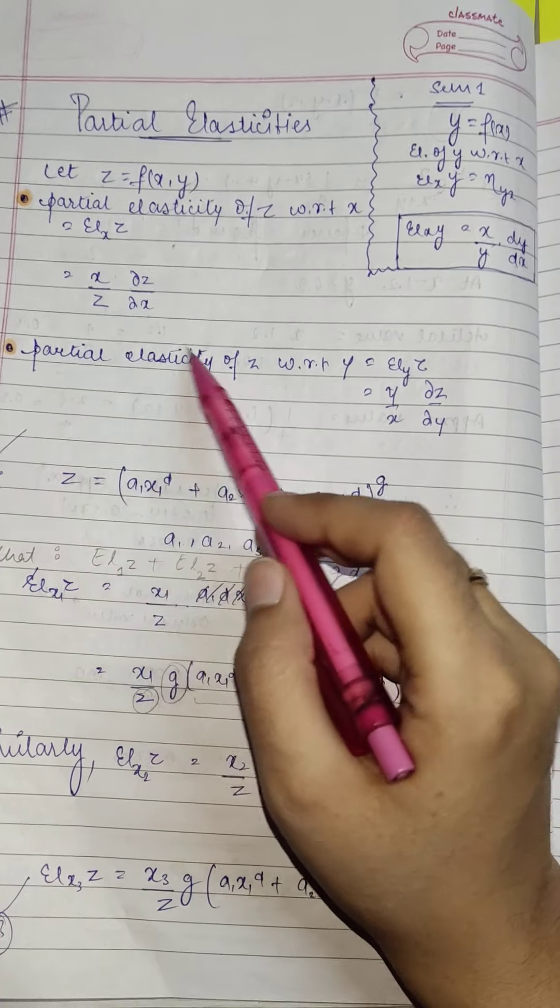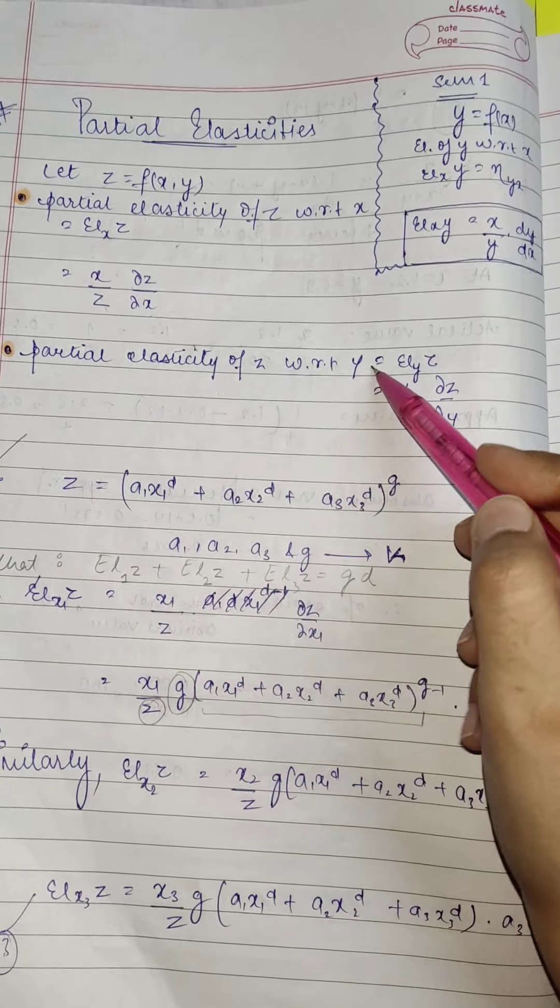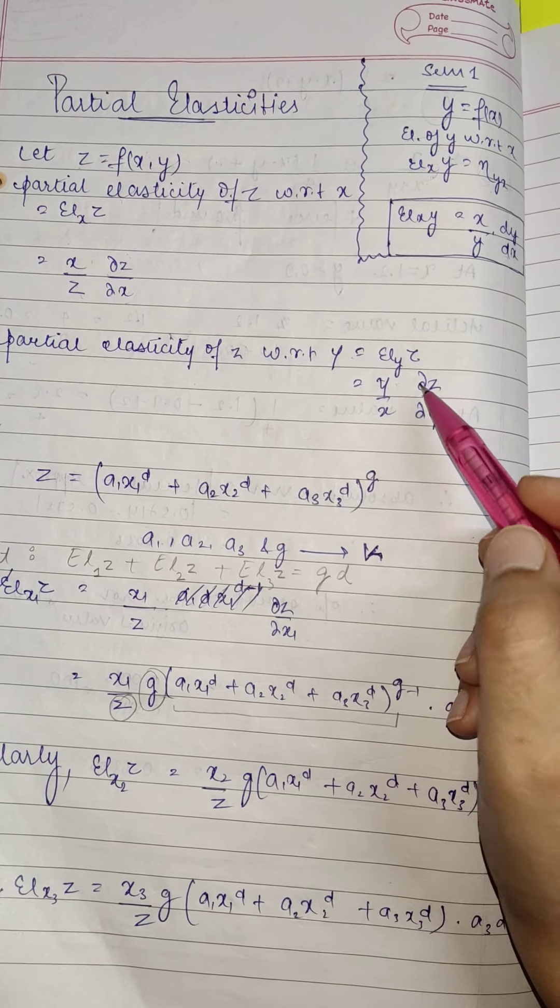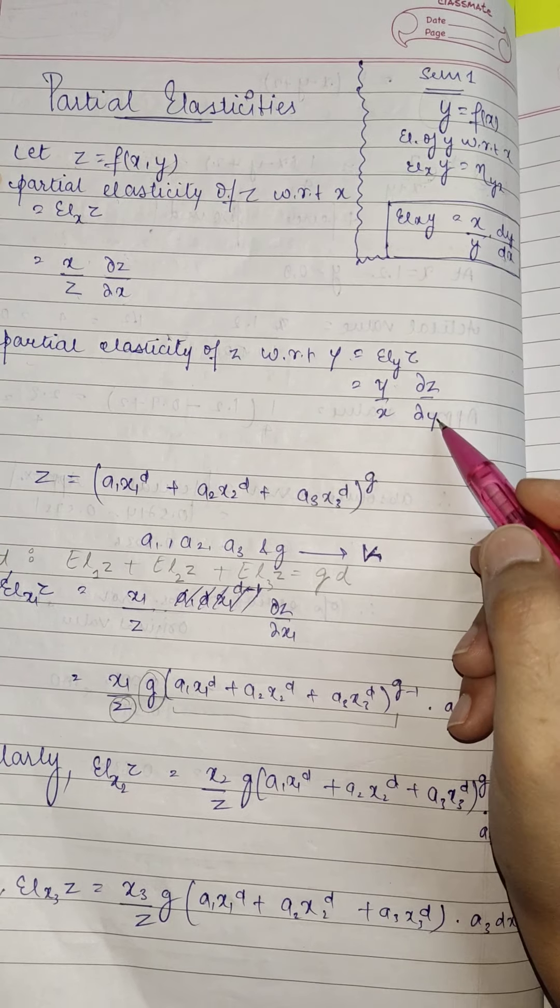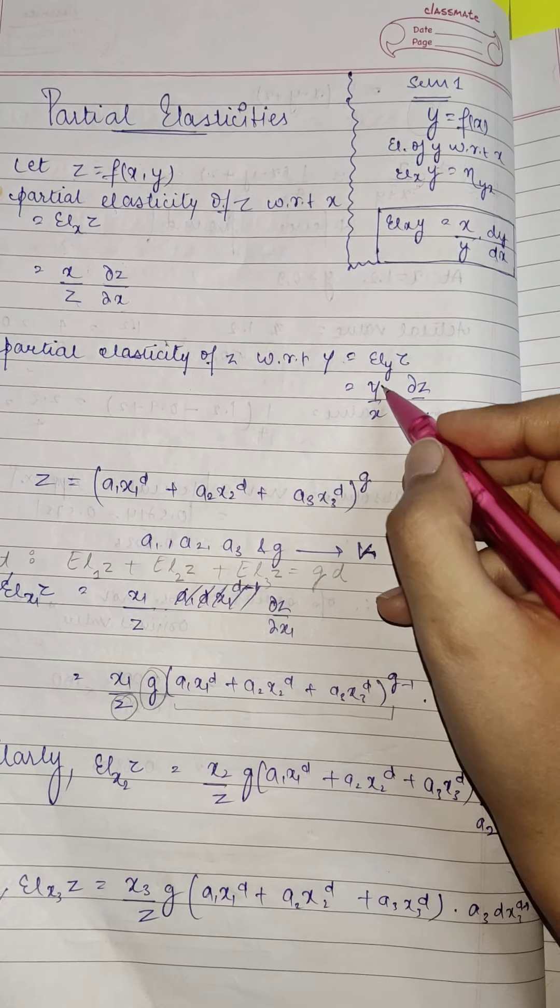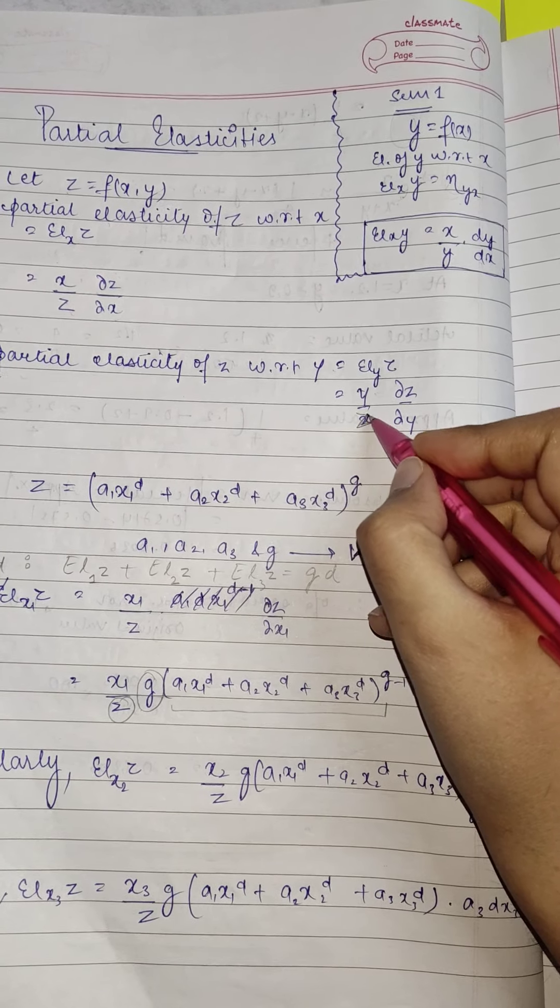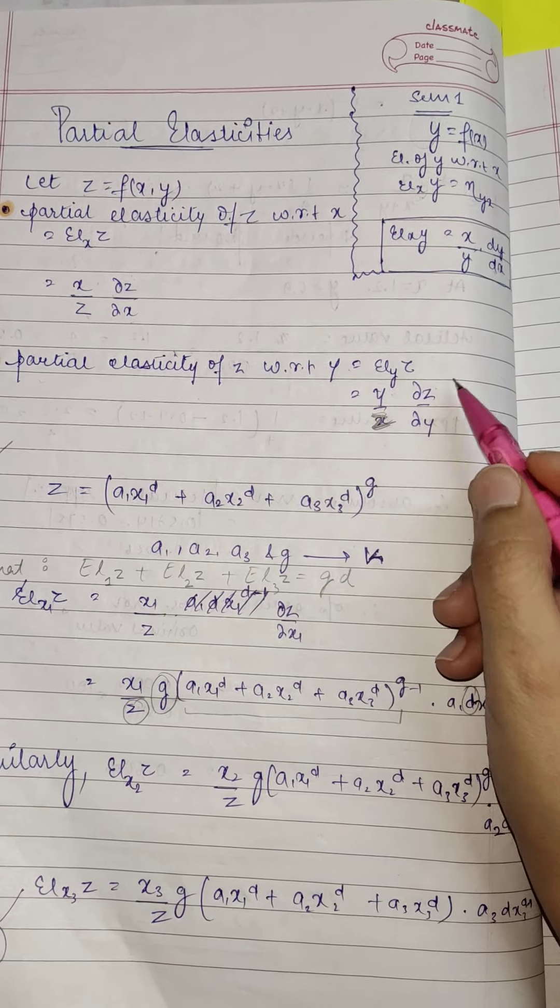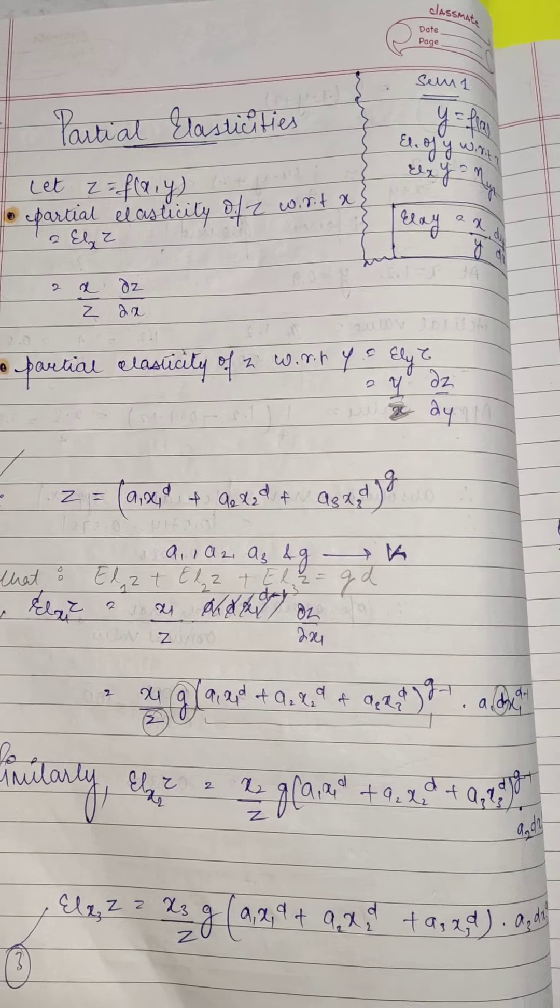Likewise, partial elasticity of z with respect to y will be—oh, what is this? This is z. y upon z times del z upon del y.